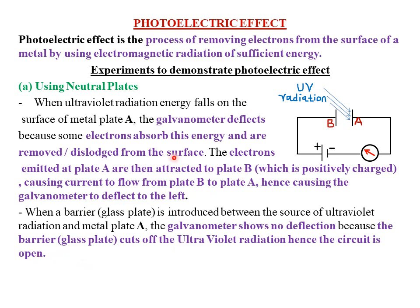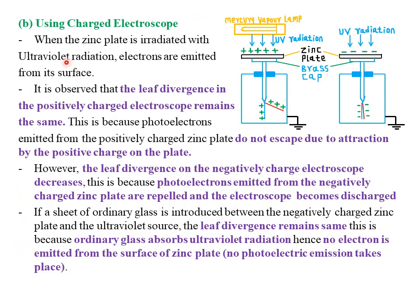Next we look at the second method of demonstrating photoelectric effect, which involves using a charged electroscope. We use both a positively charged electroscope and a negatively charged electroscope. A zinc plate is placed on the brass cup of each electroscope, then we irradiate the zinc plate with ultraviolet radiation to cause photoelectric emission. The mercury vapor lamp acts as the source of ultraviolet radiation, and when the zinc plate is irradiated, electrons are emitted from its surface, provided the ultraviolet radiation is of sufficient energy.